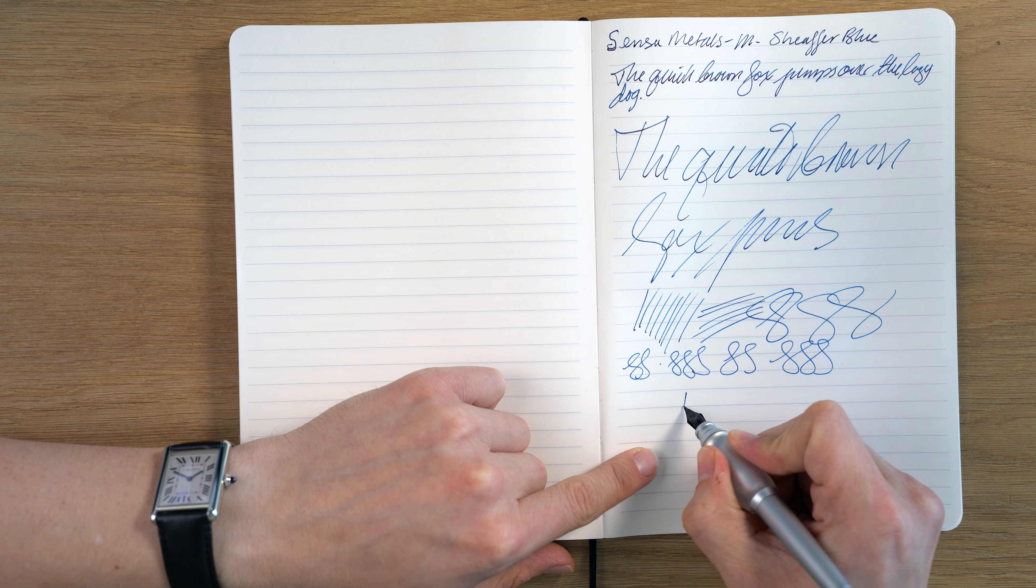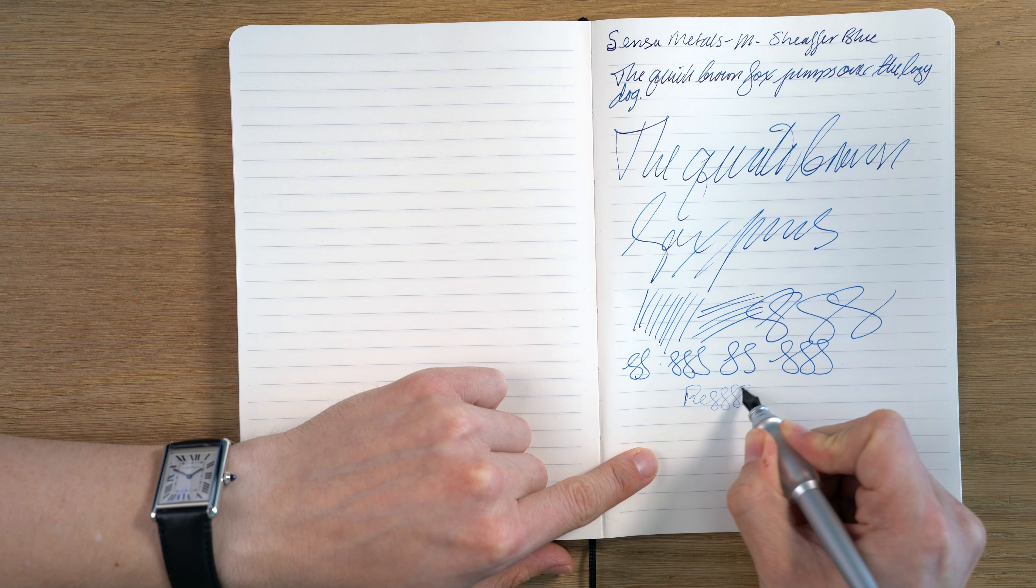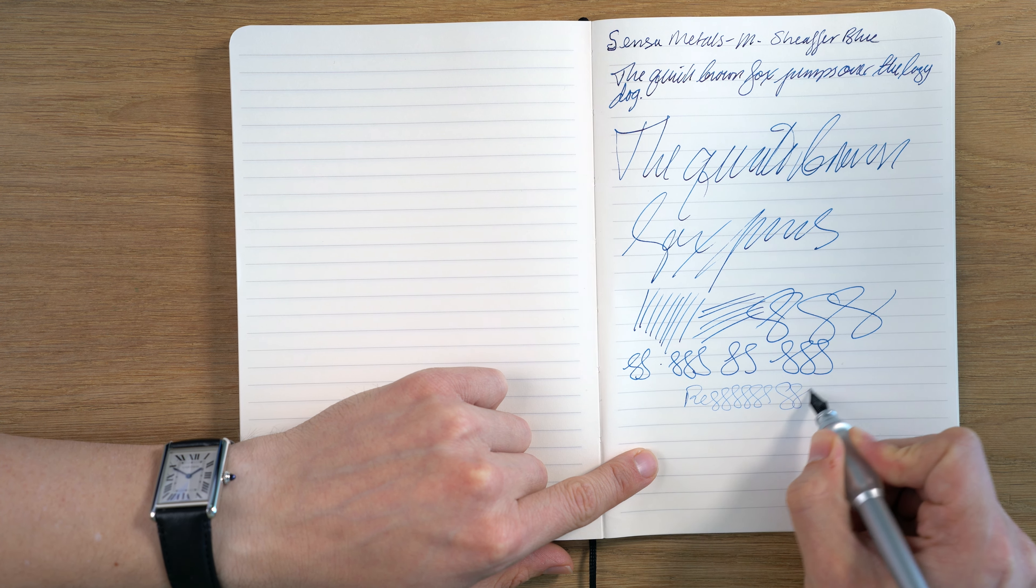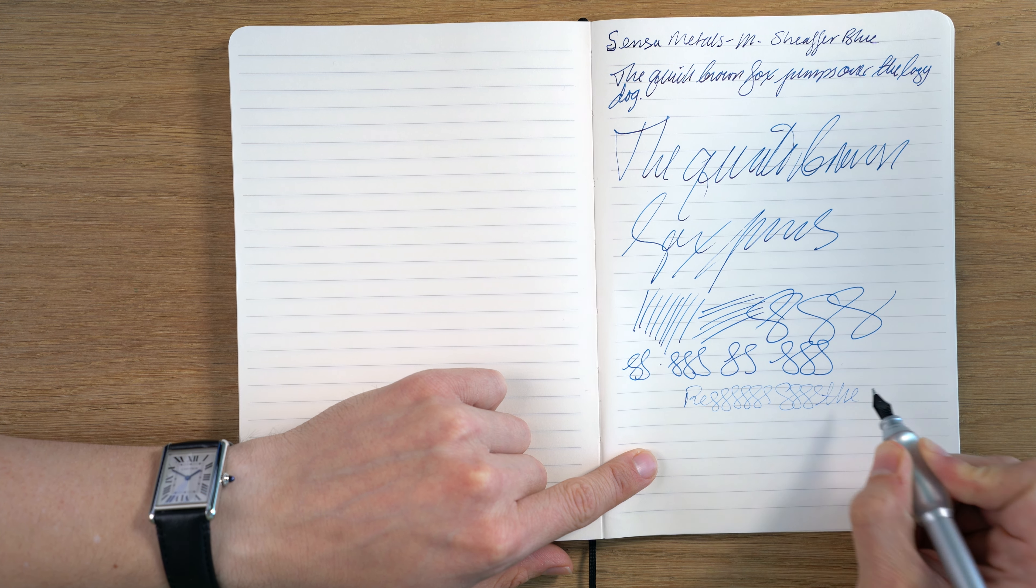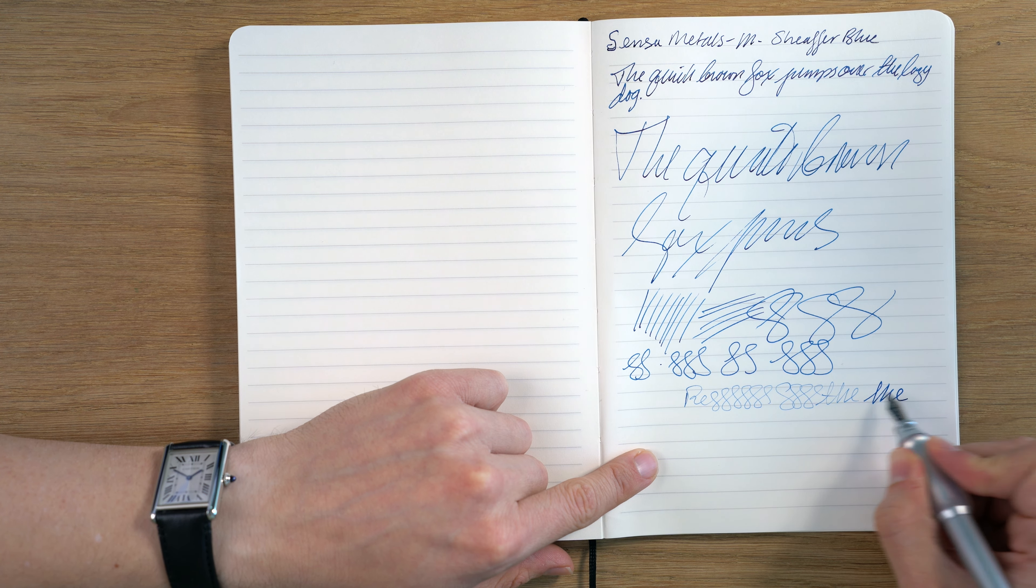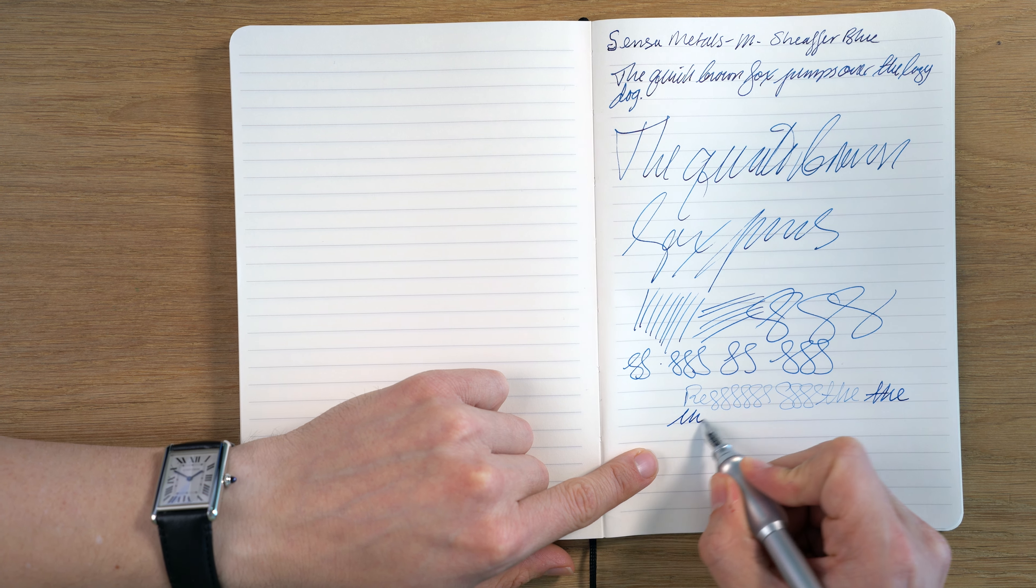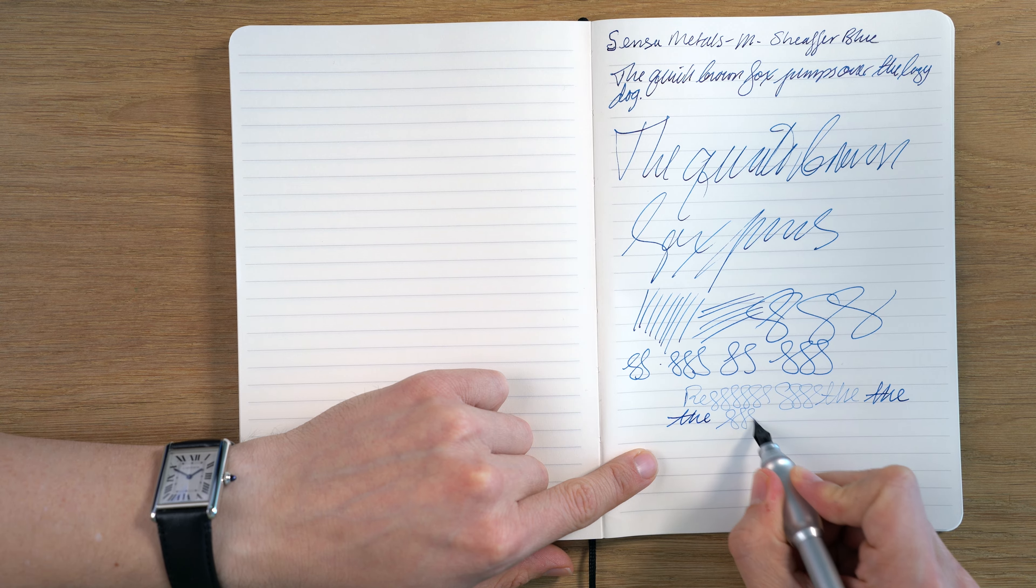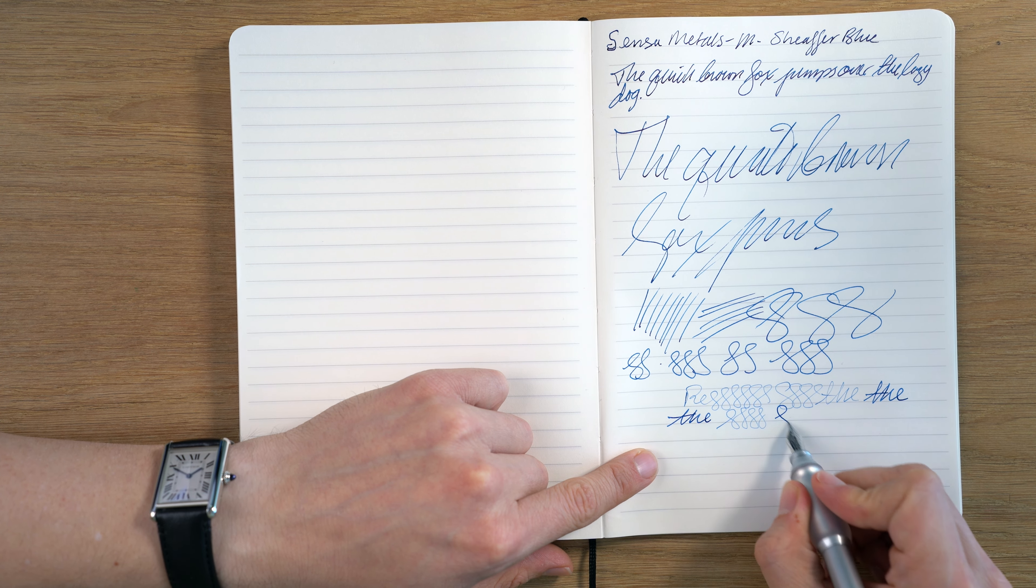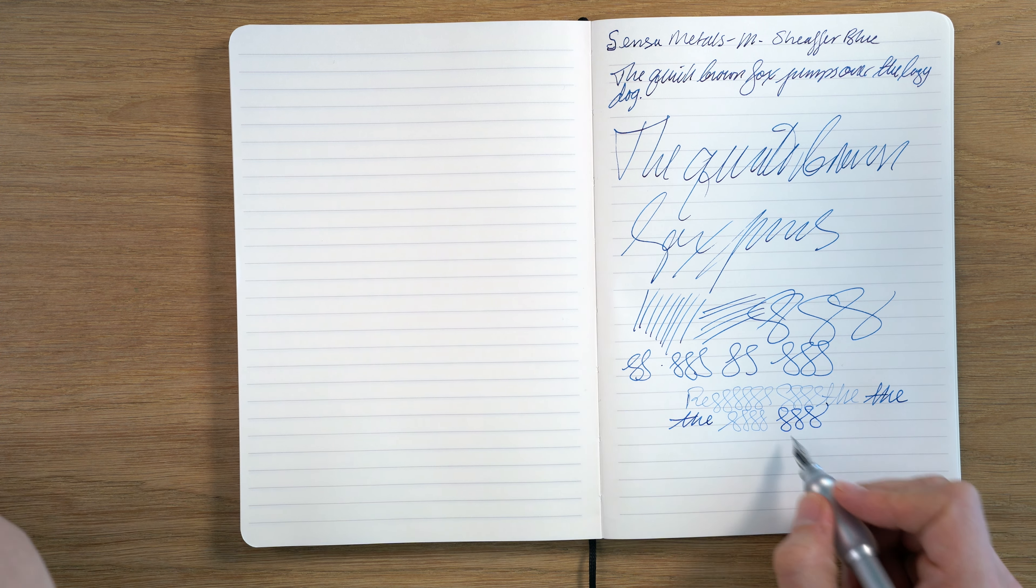Now, in terms of reverse writing, seems to be able to do it. It's relatively smooth. Maybe it's this paper. I don't know. So, yeah, and you definitely do get a difference in the line there.